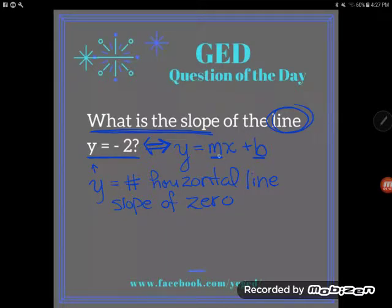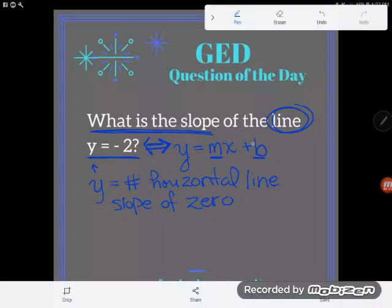I could have an m, but the m, the slope, is always the number with the x. And I can have a b. The b is the number adding or subtracting. But you can see it's not multiplying with x.